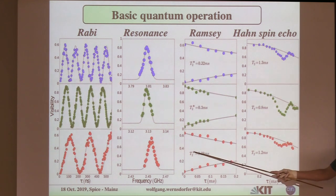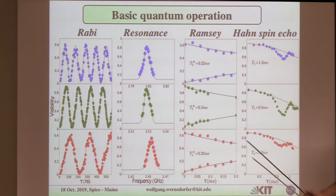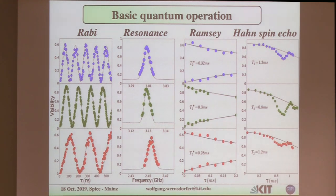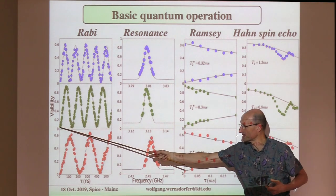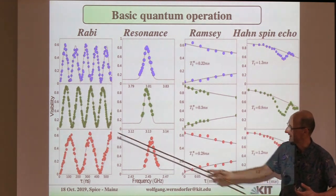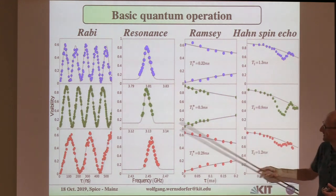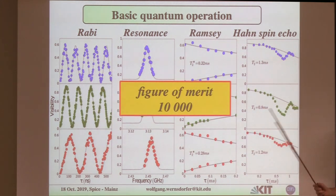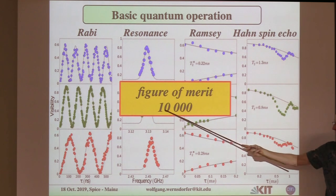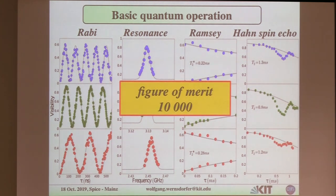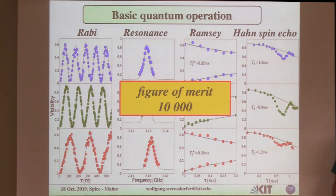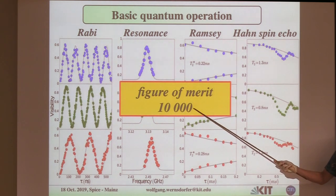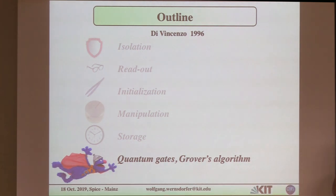With spin echo the T2 is a little bit longer, getting rid of some dephasing. The important thing is how many operations you can do within T2 — this is called the quality factor. The time to make a pi/2 pulse divided into T2 gives you the quality factor. For our systems, we can in principle make 10,000 pulses before we lose the quantum phase. This means it's interesting — our system can start to do more complicated stuff.